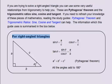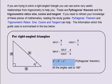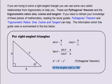For right-angled triangles: the sine of angle theta is a divided by c; the cosine of angle theta is b divided by c; the tangent of angle theta equals sine theta divided by cosine theta, which equals a divided by b. Also, a squared plus b squared equals c squared, which is Pythagoras' Theorem. All the angles add to 180 degrees.